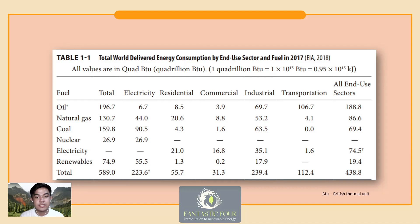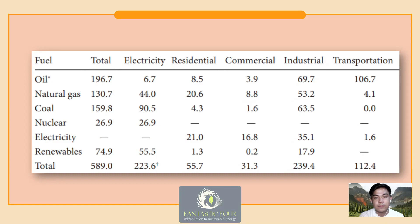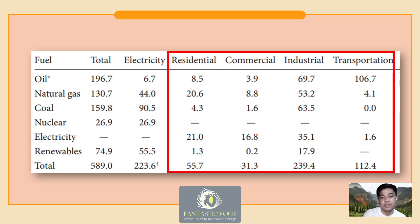Here is a table presenting the breakdown of total world delivered energy consumption by end-use sector and fuel type in 2017, from the US Energy Information Administration (EIA). All values are in quad BTU — quadrillion British Thermal Units. More than half of global energy is used by the industrial sector, with a total of 239.4 quad BTU, followed by the transportation sector with 112.4 quad BTU, then the residential and commercial sectors.